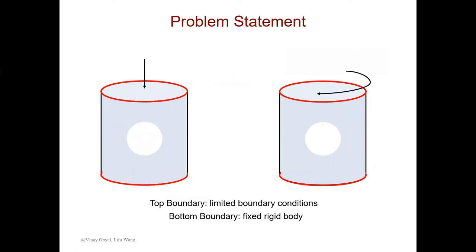Here comes the boundary conditions and applied load. The bottom surface we are going to consider as a fixed rigid body, and the top boundary condition is the limited boundary condition. For compression, since the top surface is going to move downward, we are going to fix all other degrees of freedom. For torsion, since the top surface is rotating, we are going to fix all other degrees of freedom except the horizontal rotating one.